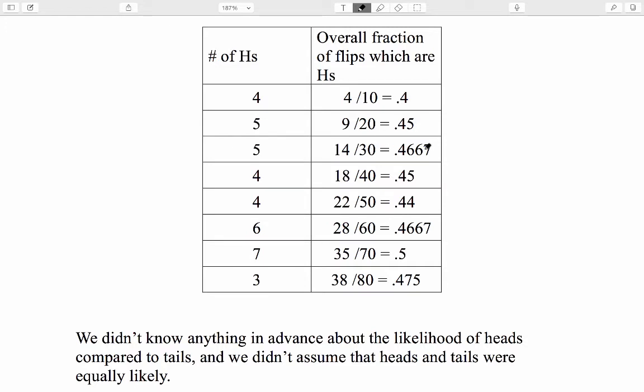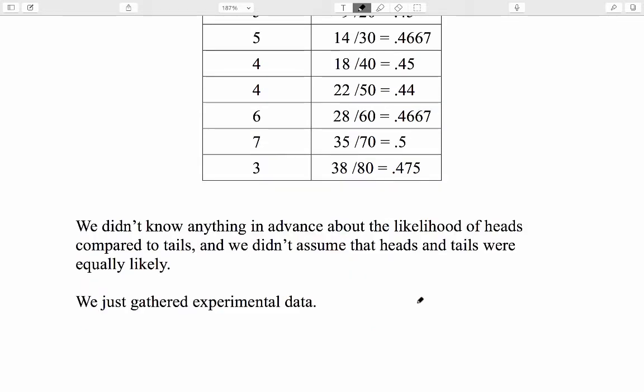As we collected more data, we revised our estimate of the overall relative frequency with which heads was occurring. Eventually, after 80 flips, we stopped for no particular reason. As of the 80th flip, the experimental probability was .475. We did not know anything in advance about the likelihood of heads compared to tails, and we did not assume that heads and tails were equally likely. We just gathered experimental data, and after 80 flips, our data suggested that this coin had a .475 chance of coming up heads.